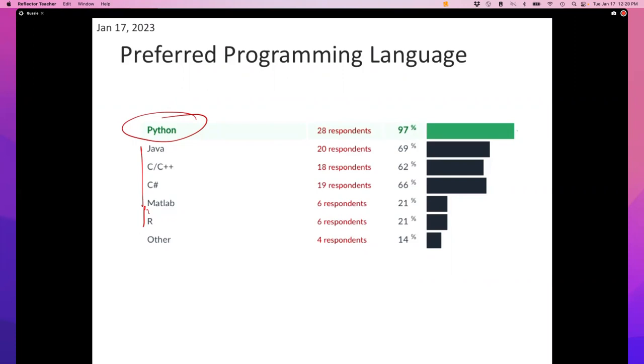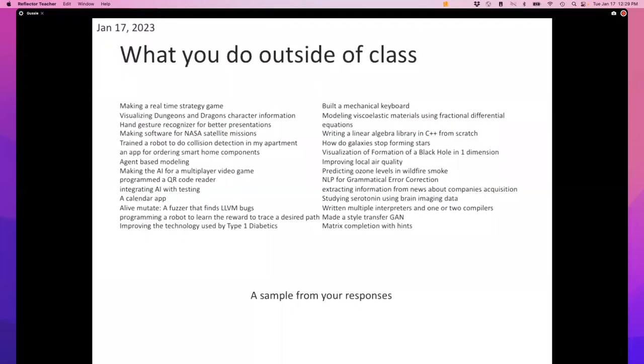One of the other things I learned from the quiz is that you are an interesting lot. There's a question there that asks, what do you do outside class? If you answered something there, see if you can find yourself in that list. See if you can find the person who, for example, writes software for NASA. It's an interesting group. There's always an interesting group of people in this class and this year is no exception.